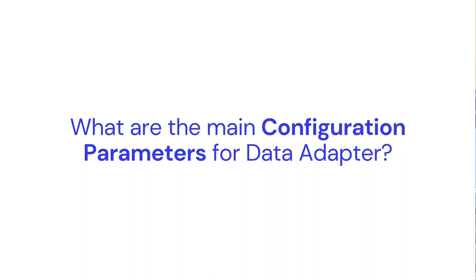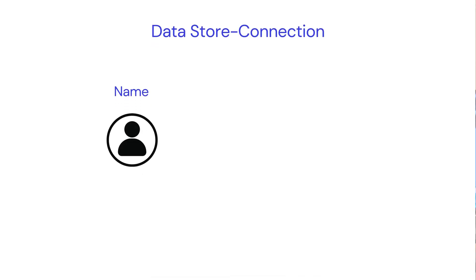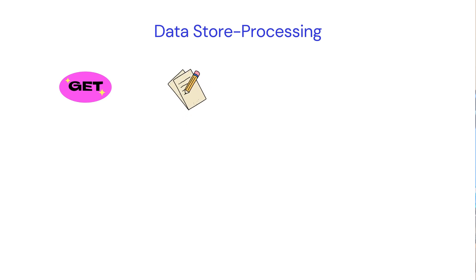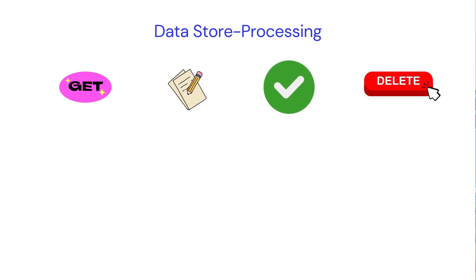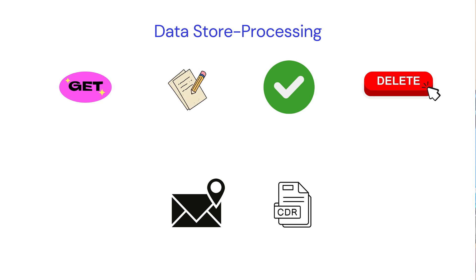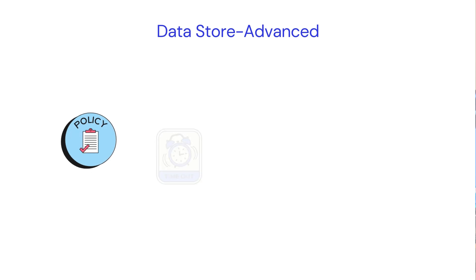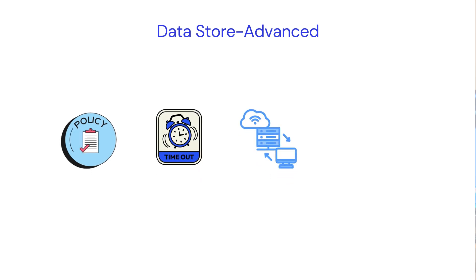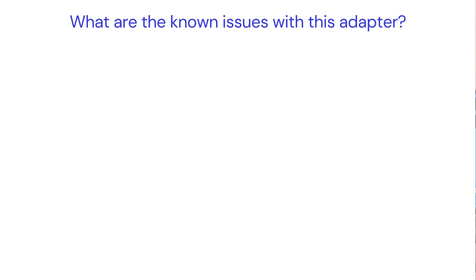Now let's talk about the configuration parameters that we need to set to configure a data store adapter. In a data store adapter you need to specify the data store name and the visibility of the data store — for example, visibility can be global or local. In the processing section you need to specify the operation type, such as get, write, select, or delete, and the message ID or correlation ID. In the advanced section you need to specify the retry policy, timeout, proxy settings, or the message size.